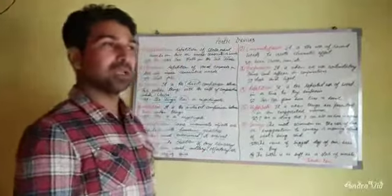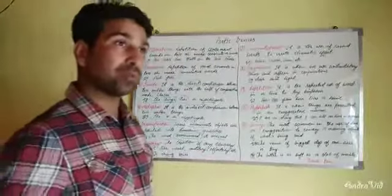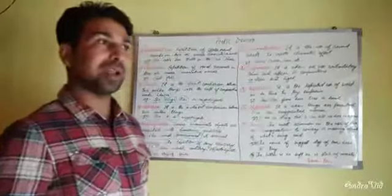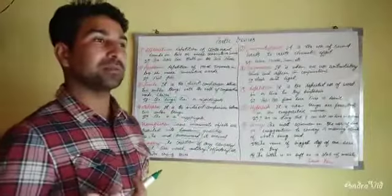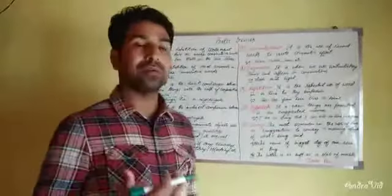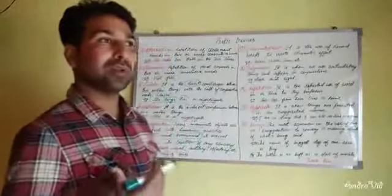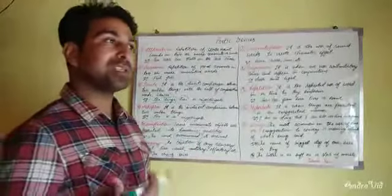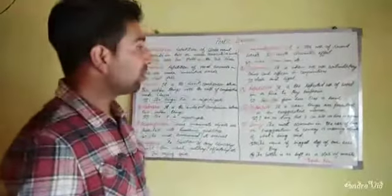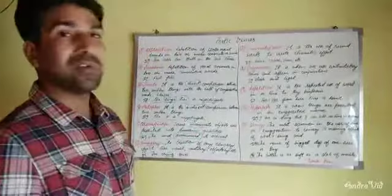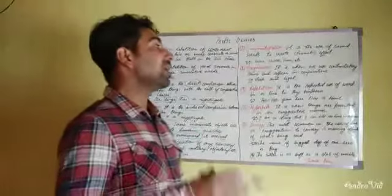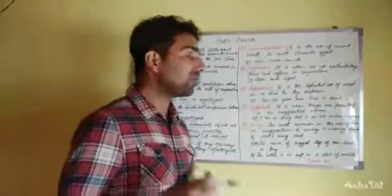Onomatopoeia is the use of words that imitate actual sounds. Words used in a poem that sound like what they describe are onomatopoeia. For example: 'buzz,' 'croak' — whenever we use these kinds of sound-imitating words in poetry, it is onomatopoeia.